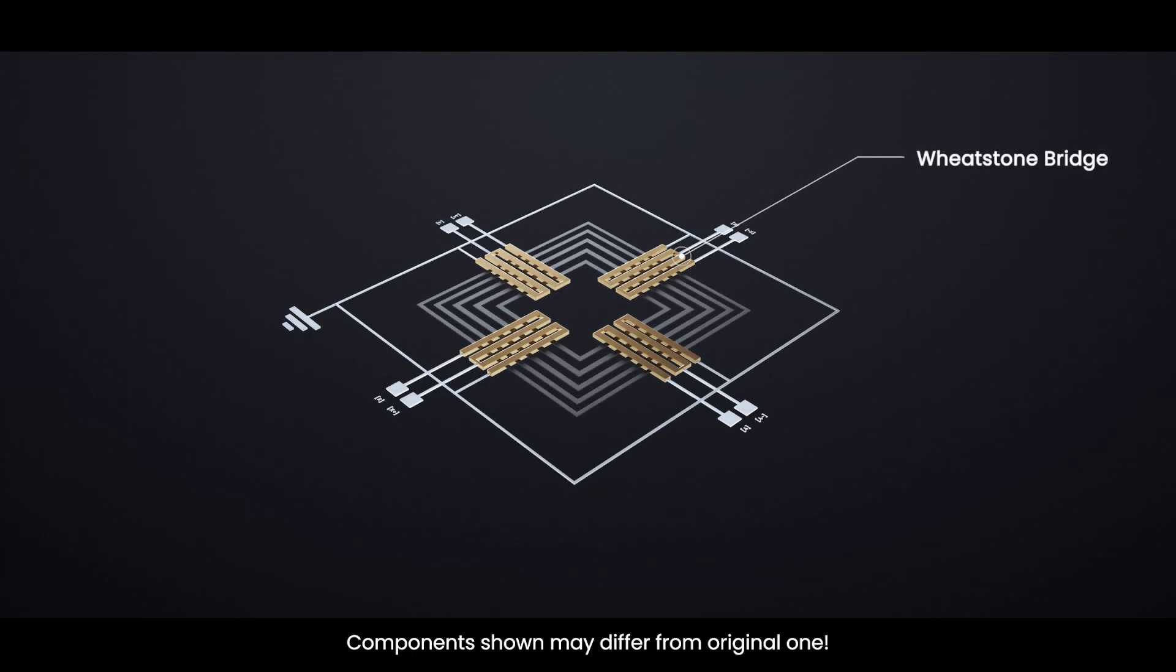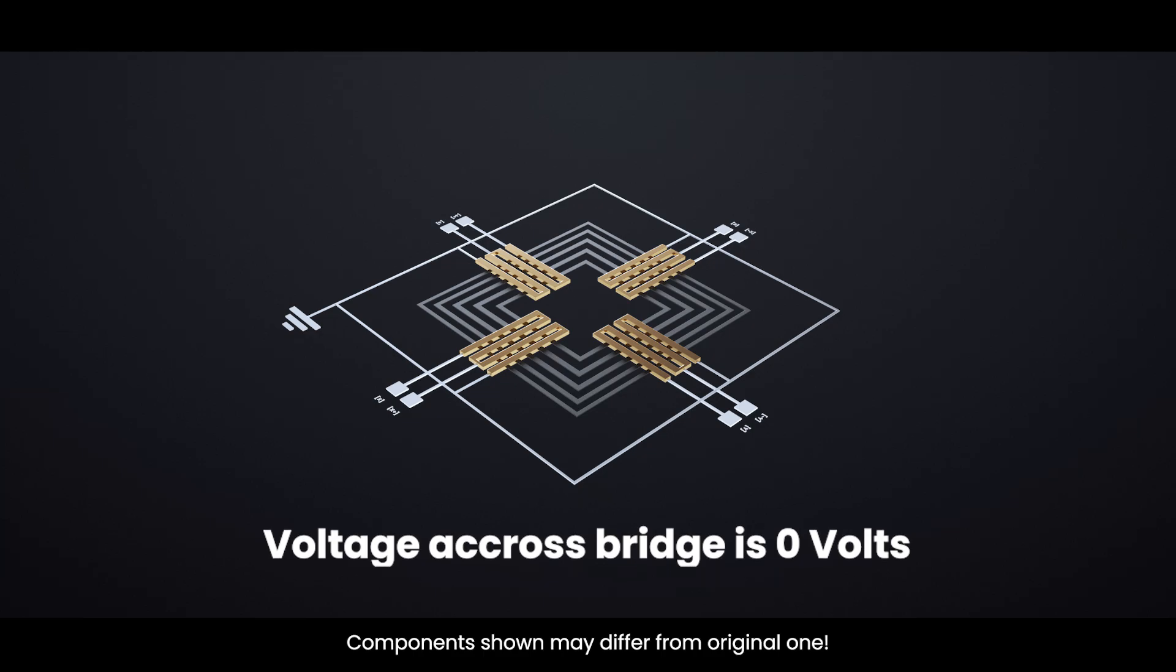The HMC5883L uses a Wheatstone bridge made of four magnetoresistive elements, tiny resistors made from a special metal that changes resistance when exposed to a magnetic field. In each axis, X, Y, and Z, these four resistors are arranged in a diamond shape. When no magnetic field is present, the resistances are balanced, and the voltage across the bridge is zero.